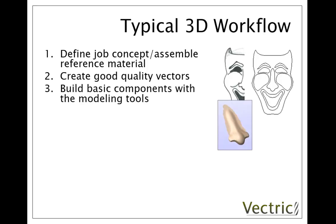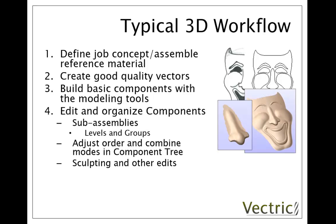Next you'll use those vectors and the modelling tools to build basic shapes and start combining those together into what we typically refer to as sub-assemblies — this is where you start to use the levels and groups in order to combine individual shapes together to slowly build a more and more complex shape, managed in the component tree. As you're doing this you may use some of the editing tools to smooth and blend and get the shapes to interact in just the way you want.